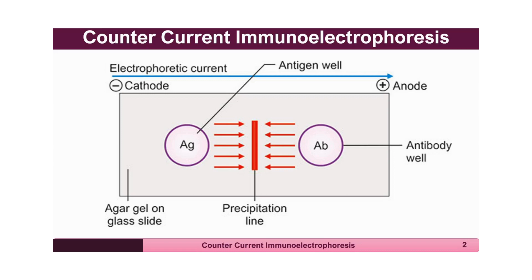Generally, the antibody-loaded side well is connected to the positive pole and the antigen-loaded side is connected to the negative pole. Under the given buffer conditions — acetate buffer of pH 7.2 to 7.5 — the antigen under test will be negatively charged and the antibody will be positively charged. So the antibody and antigen, under the electric field, will move towards each other to form a precipitin band.